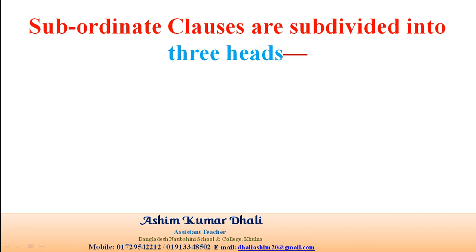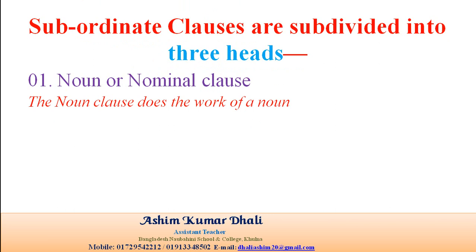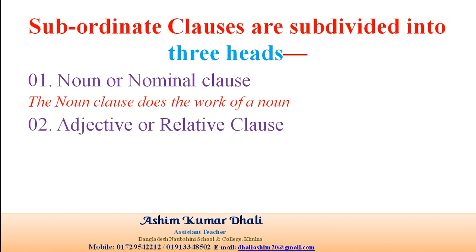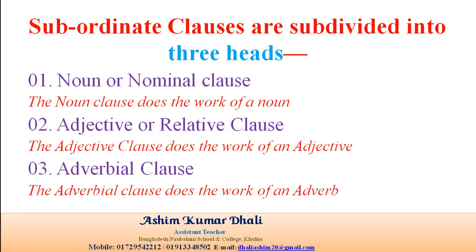Subordinate clauses are subdivided into three heads. Number 1: Noun or Nominal Clause — the noun clause does the work of a noun. Number 2: Adjective or Relative Clause — the adjective clause does the work of an adjective. Number 3: Adverbial Clause — the adverbial clause does the work of an adverb.